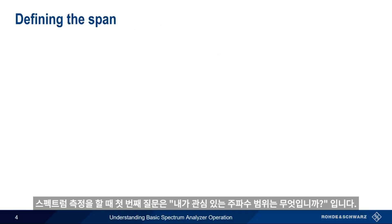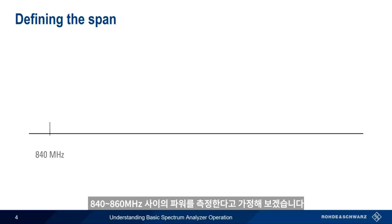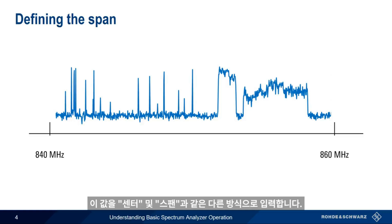The very first question you have to answer when making spectrum measurements is: what frequency range am I interested in? In other words, what are the start and stop frequencies? Let's say we're interested in measuring power between 840 and 860 MHz. We could enter these values as start and stop frequencies, but most people who use spectrum analyzers regularly enter these values a different way — namely as center and span.